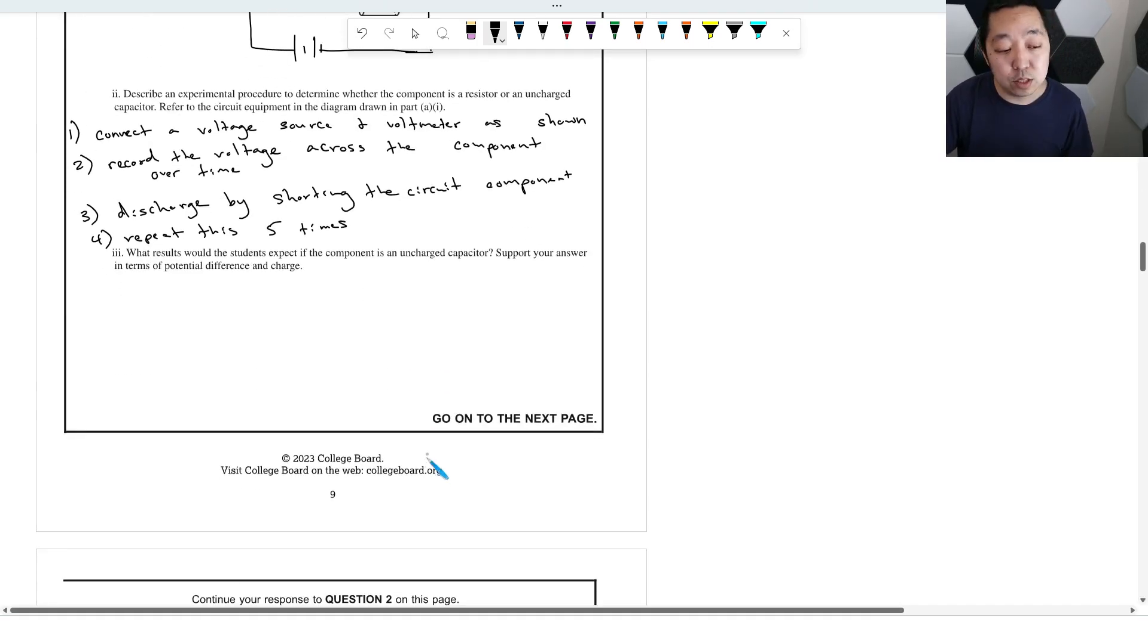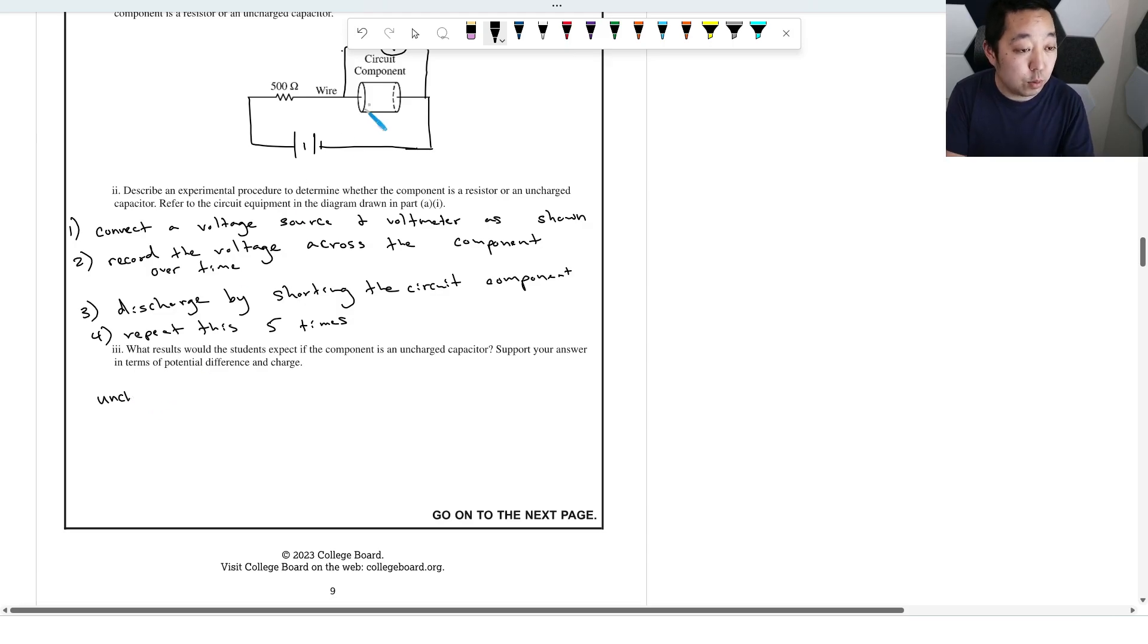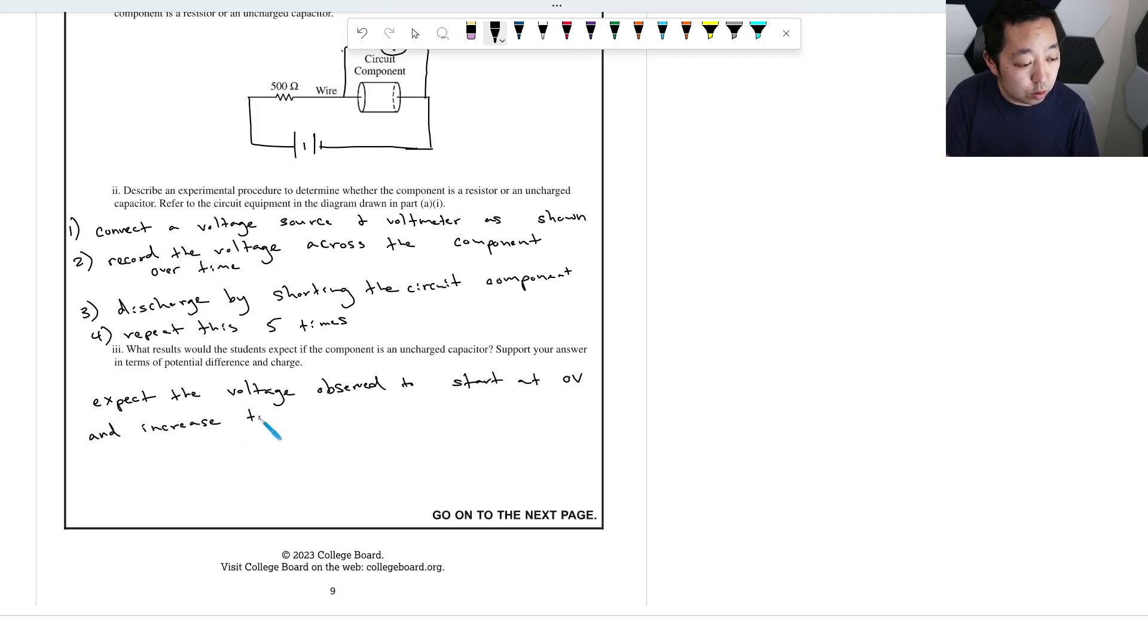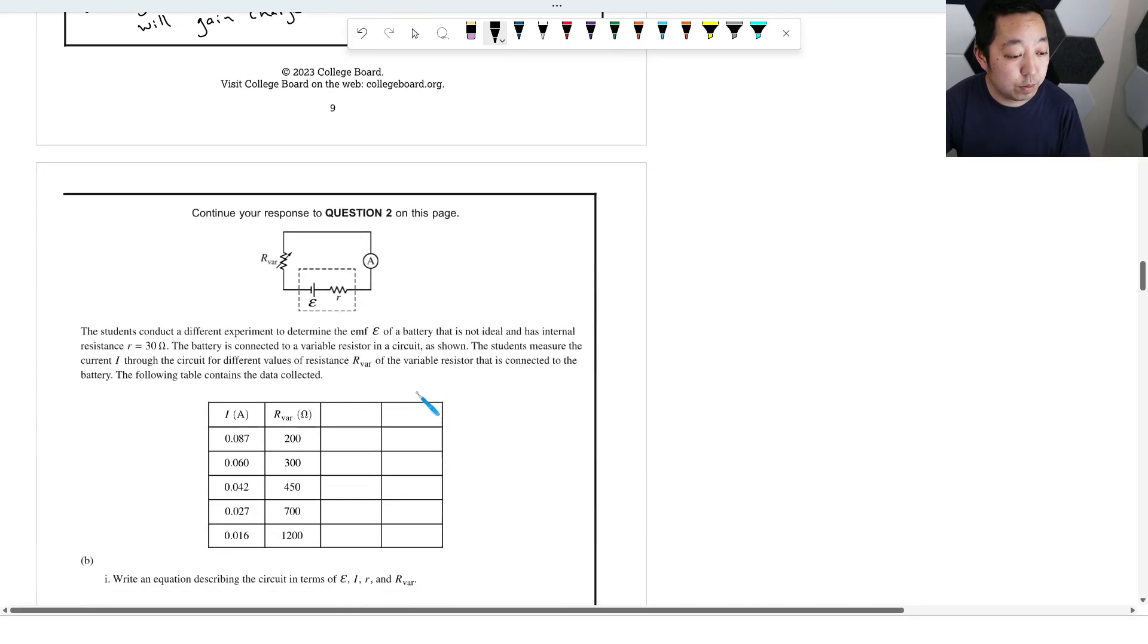What results would the student expect if the component is an uncharged capacitor? If it's an uncharged capacitor, you would expect the voltage to start at zero. You would expect the voltage observed to start at zero and increase to the voltage value of the battery. And in terms of charge, initially it is uncharged, and as current flows, it will gain charge. Something to that effect would be fine, I think.